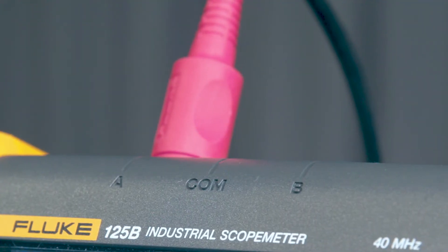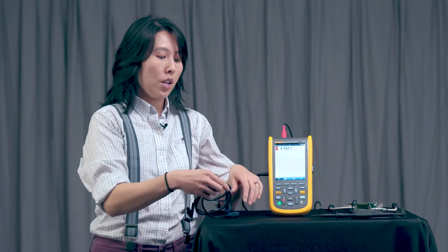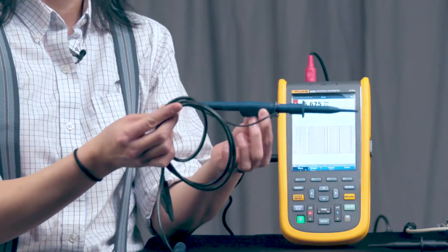If you're measuring an RS-232 signal, then you'll only need the one probe. If you're measuring, say for example, CAN bus, where you have a high and a low, you're going to need the other STL120 probe, which both of these are included in the kit, the blue and the red.